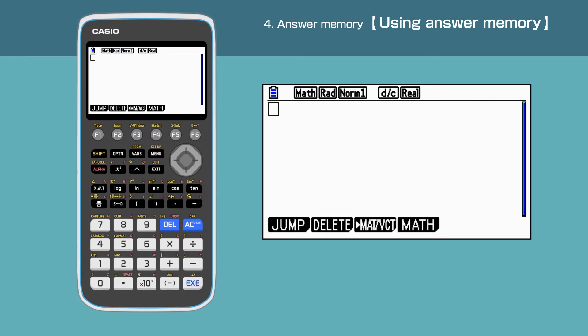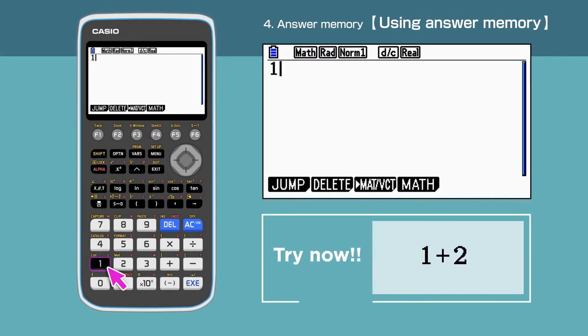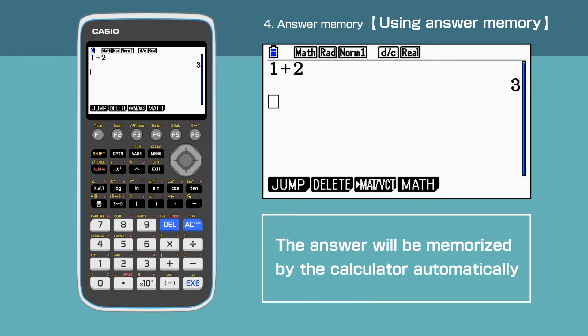Let's use the Answer Memory function. Enter 1 plus 2. The answer for 1 plus 2 is 3, and it is memorized by the calculator automatically.